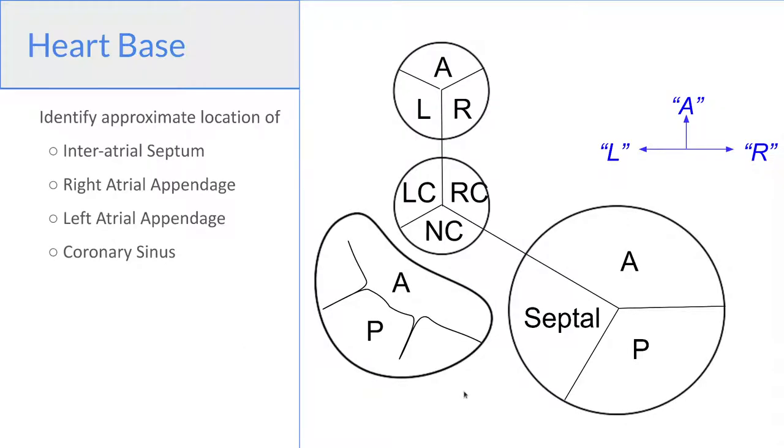And we can then quickly label all of the cusps. So the aortic valve in the middle has a right coronary cusp, a left coronary cusp, and a non-coronary cusp. The pulmonic valve in the front has an anterior right and left cusps, the tricuspid valve has an anterior posterior and septal leaflets, and the mitral valve has an anterior and posterior leaflet.